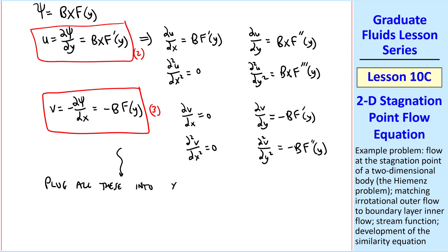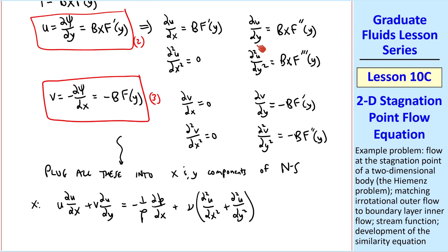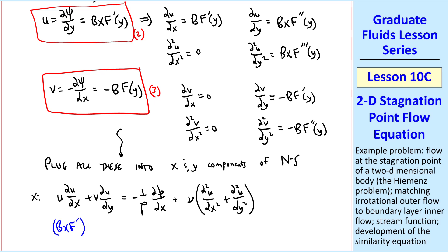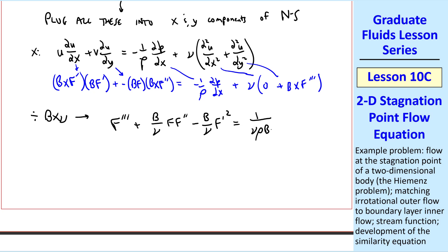Let's plug all these into the x and y components of the Navier-Stokes equation. In the x direction, I write out the two-dimensional form, without gravity, and using these derivative expressions, we get bx·f'·b·f' + (-b·f)·bx·f'' = -1/ρ·∂p/∂x + ν·0 + bx·f'''. Let's divide all the terms by bx·ν and rearrange. We get f''' + b/ν·f·f'' - b/ν·(f')² = 1/(νρbx)·∂p/∂x. We'll call this equation four. That's our x-momentum equation.